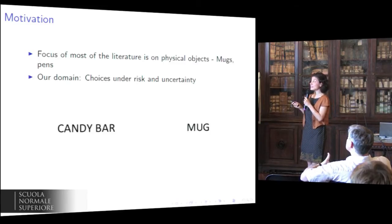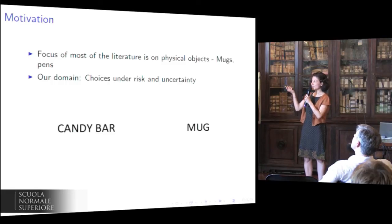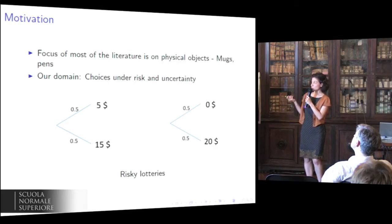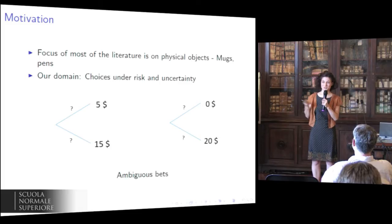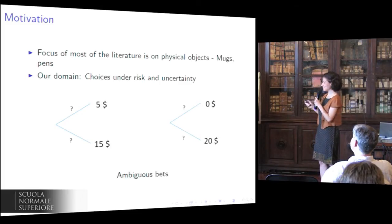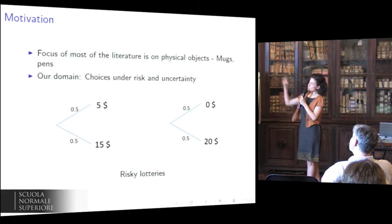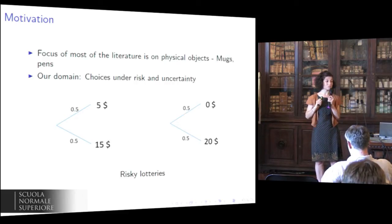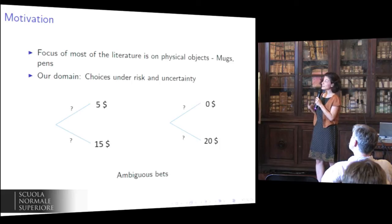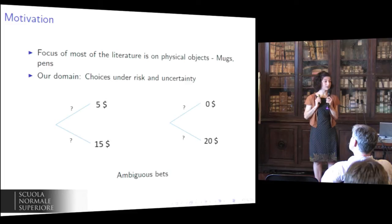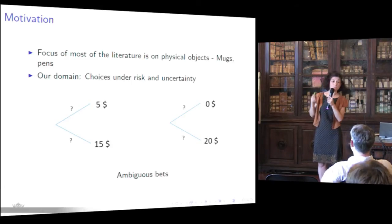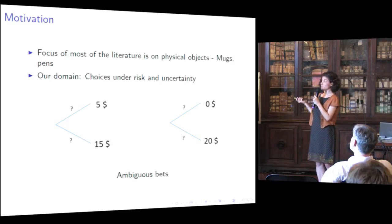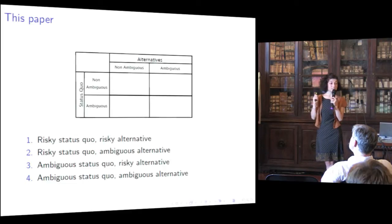What we're after is basically trying to understand if the status quo bias, which is so well observed in the space of candy bars and mugs, is also holding true with the same strength and properties in the space of risky lotteries and ambiguous bets. We refer to a risky lottery as an object that pays contingent outcomes with some specified probabilities, and we refer to an ambiguous bet as an object paying contingent outcomes with unspecified probabilities. We will look at the four cases born from the interaction between the status quo being either risky or ambiguous, and the alternative being either risky or ambiguous.